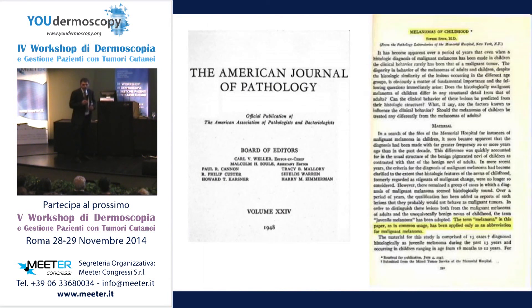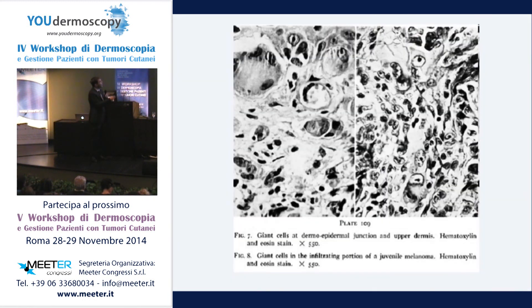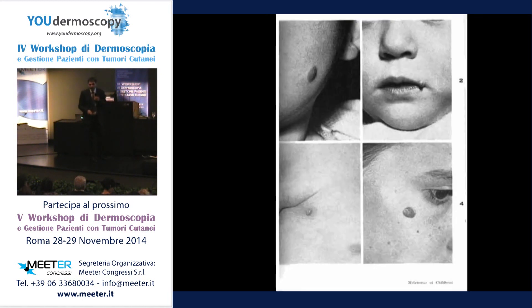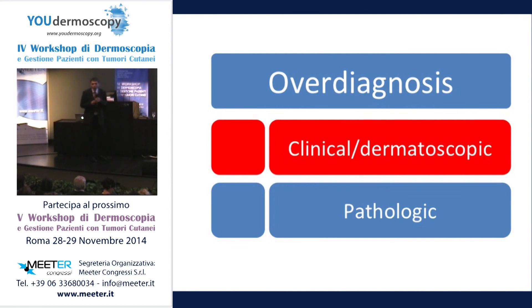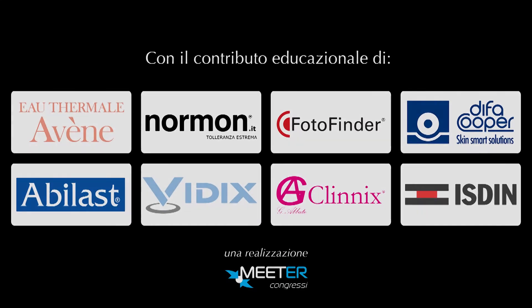It all started with overdiagnosis. The concept of Spitz nevus was introduced by Sophie Spitz, a pathologist, in 1948. She diagnosed Spitz nevi as melanoma, introducing the term 'melanomas of childhood' — so she already over-diagnosed. This is the first example of overdiagnosis. Finally it turned out that all her so-called juvenile melanomas were in reality just nevi. If she had looked at the children clinically, she would have diagnosed these as nevi, because they don't look malignant. But we also over-diagnose in children today, as shown in a more recent study.